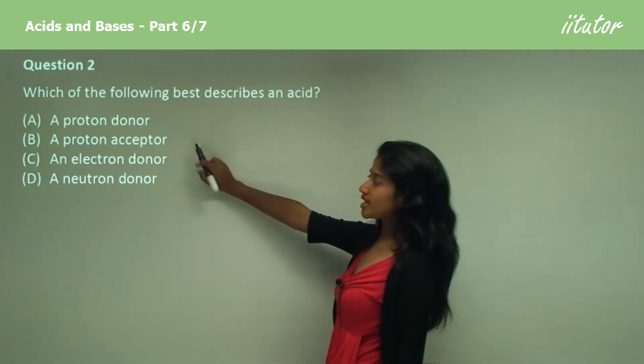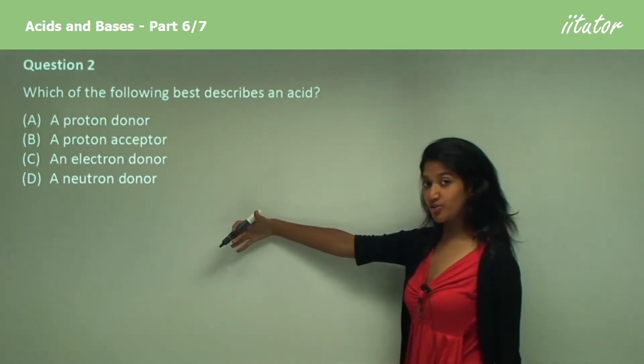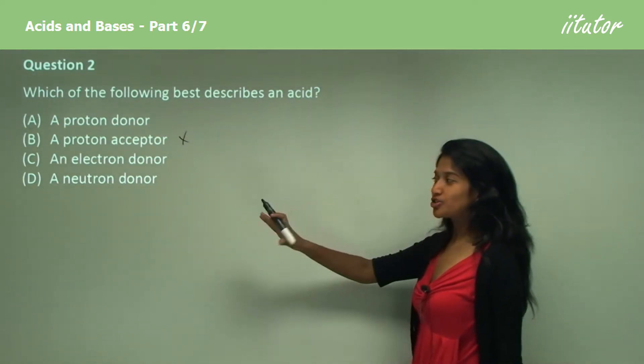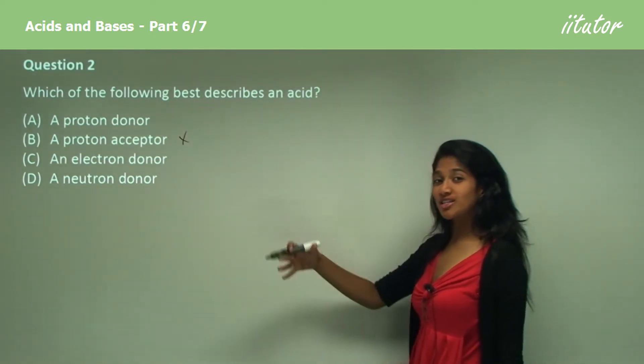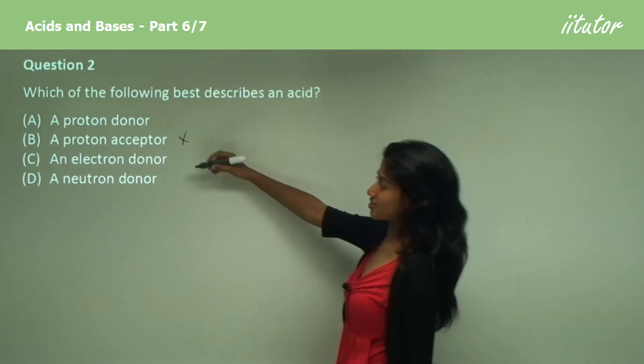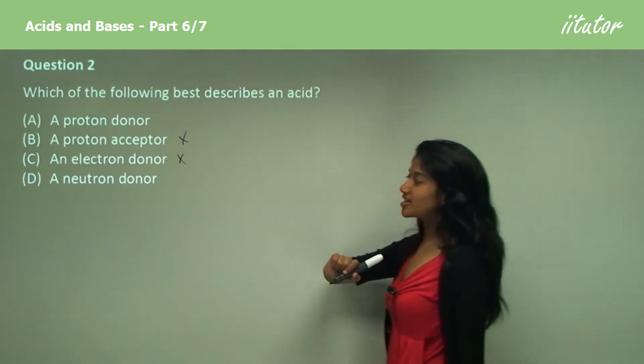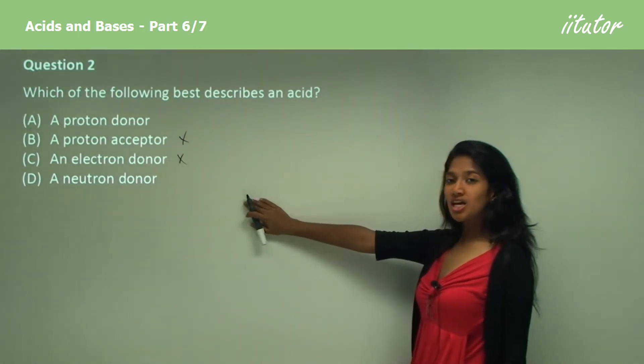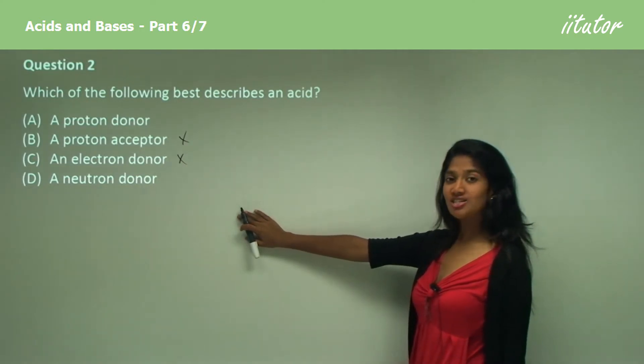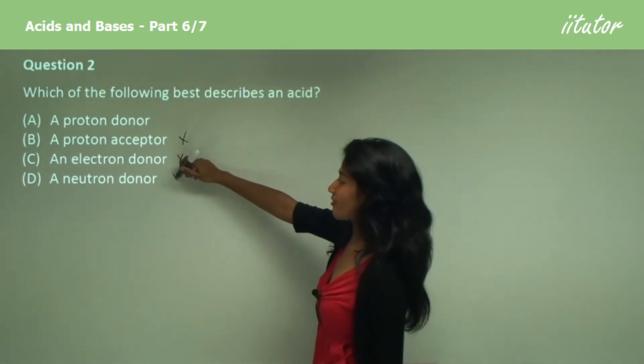Now a proton acceptor is a base, so it's not an acid, it's a base. An electron donor, electrons are donated in chemical reactions, not in ionization reactions, so that is not correct. A neutron donor? Neutrons are not donated in ionization reactions, that is not correct.